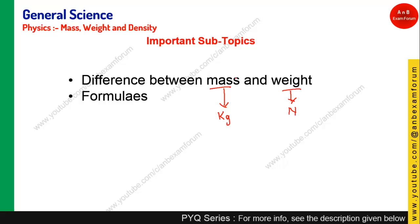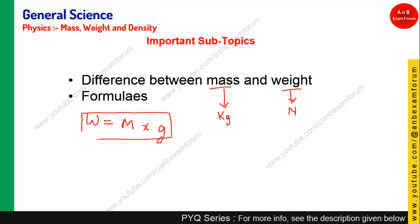Your weight can vary from place to place. There is one simple relationship between weight and mass: weight is equal to mass multiplied by acceleration due to gravity (W = mg). This formula will be very useful for this session.